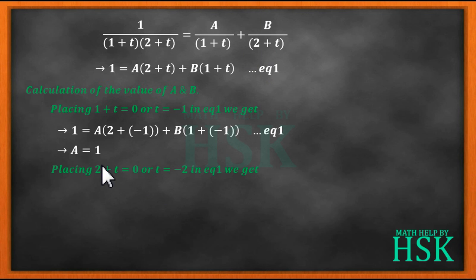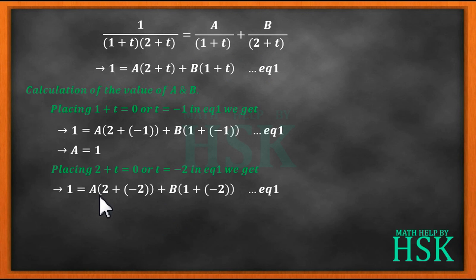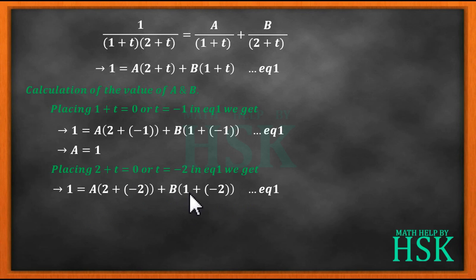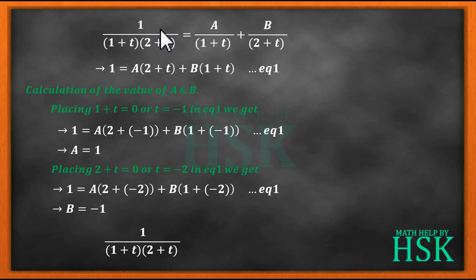Similarly, placing 2 + t = 0, i.e., t = −2, into equation 1: 1 = A(2 + (−2)) + B(1 + (−2)). The A term cancels to 0, giving 1 = −B, so B = −1. Therefore, the partial fraction is 1/(1 + t) − 1/(2 + t).